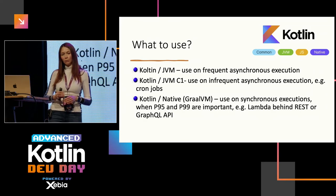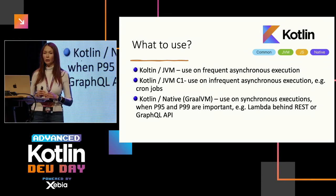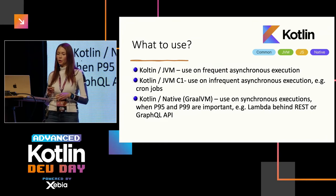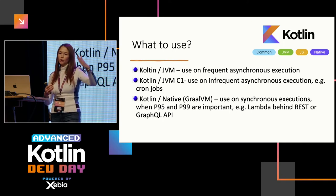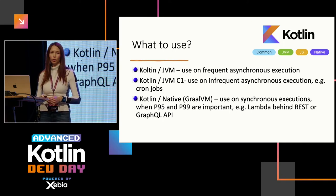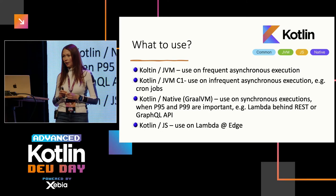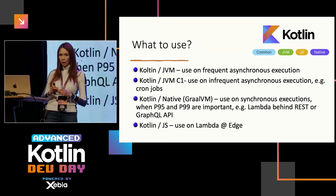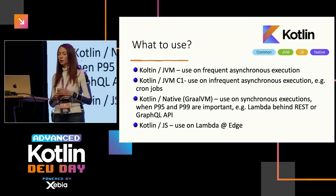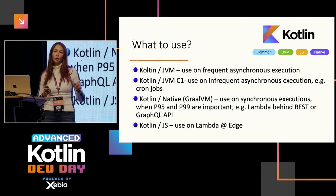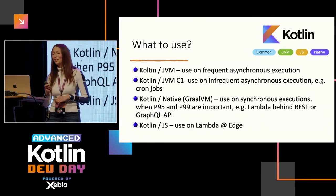If you're worried about p95 to p99 and users are waiting for a response, go native — it will really make a difference. It's a bit more work to get used to, but you can upgrade from JVM and deploy to GraalVM. As for Kotlin/JS: there's a Lambda@Edge, a special Lambda that runs on edge locations closer to users. It has limitations including runtime — you can only run Python or Node.js. So if you want Kotlin everywhere, you can do this.